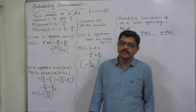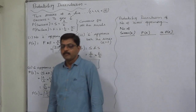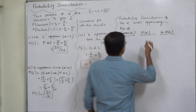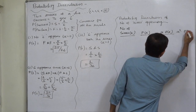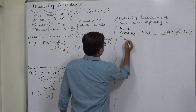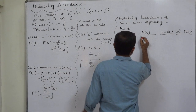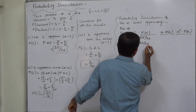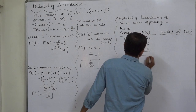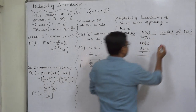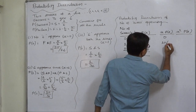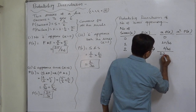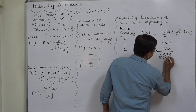In a probability distribution, the random variable takes all possible mutually exclusive and exhaustive outcomes of the experiment. The probability distribution of the number of sixes: X = 0, 1, 2 with respective probabilities 25/36, 10/36, and 1/36 — total equals one. Then X times P(X): zero, 10/36, and 2/36. The summation is 12/36, which is the expected value E(X).